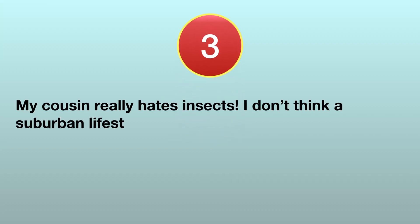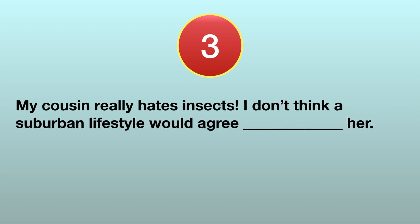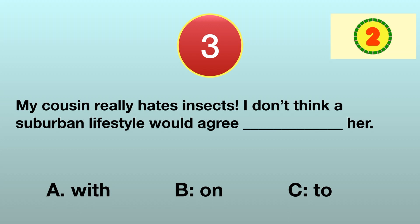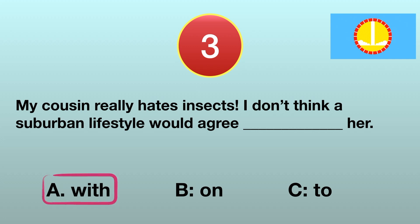Number 3. My cousin really hates insects. I don't think a suburban lifestyle would agree with her. A. With, B. On, C. To. The correct answer is A. With. Suburban areas are outside cities, so one can expect to encounter insects quite often. The speaker's cousin doesn't like insects, so living in a suburb would not suit her and would probably make her quite unhappy. Then we can say the suburban lifestyle doesn't agree with her.